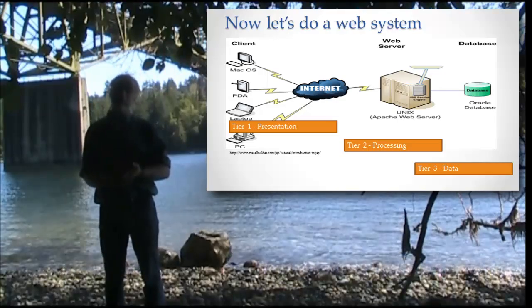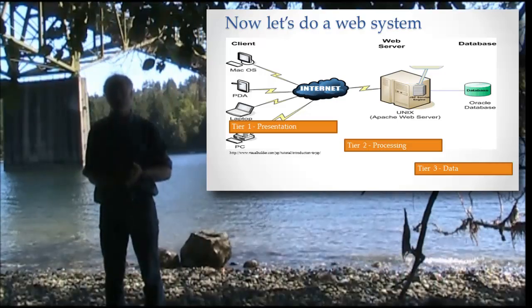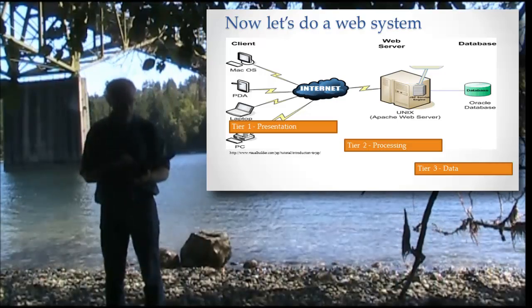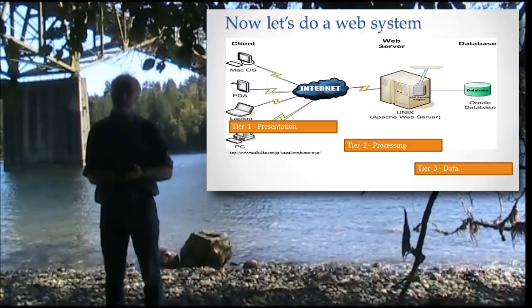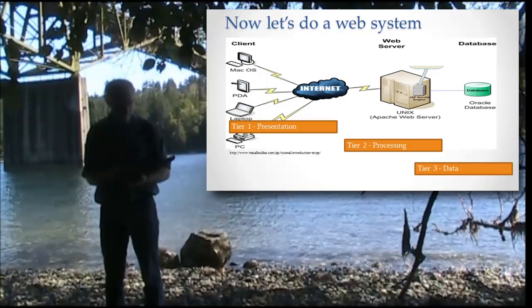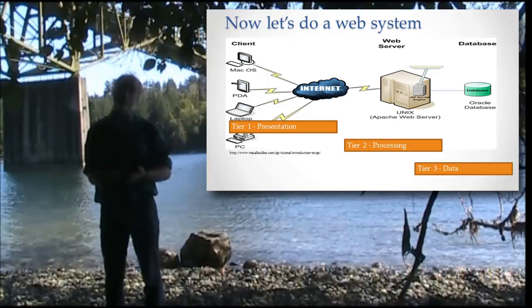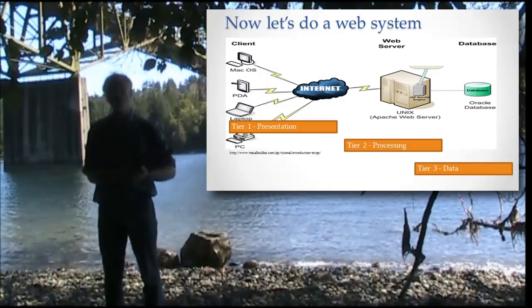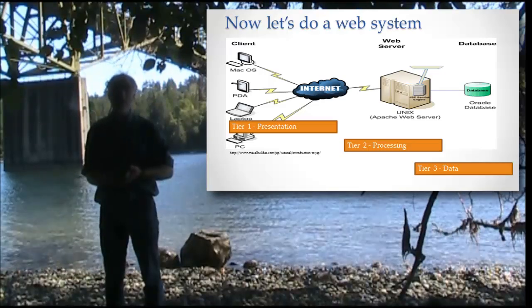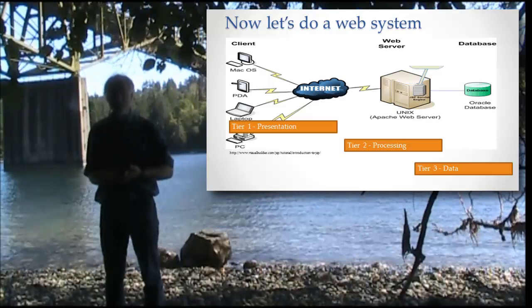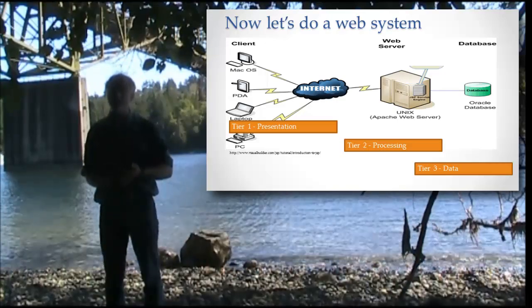Now we're going to break it down into two parts: the processing part that does all the work, that does all the massaging, that does all the manipulation of the information, and then the data tier. Tier number three, the data tier that stores the information. In general what happens is this processing tier reaches into the data tier, pulls out the information necessary to make a web page, does all the manipulations, turns it into HTML. Remember HTML is the language of web pages, and then sends it to the browser. The browser, just like a television set, really doesn't know much to do except how to display what's sent to it from the server.